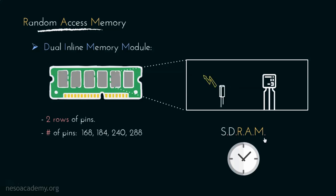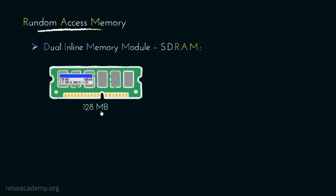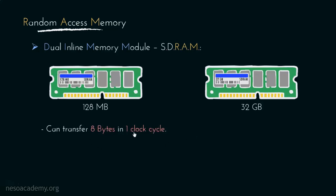In the case of SDRAMs, due to synchronization with the system clock, we can achieve efficiently controlled timing. The storage capacity of DIMM-SDRAMs ranges from 128 MB to 32 GB, and they can transfer 64 bits in one clock cycle. Since 1 byte is 8 bits, DIMM-SDRAMs can transfer 64 divided by 8, that is 8 bytes per clock cycle. This is known as the data path, so we can state that DIMMs have 8-byte wide data paths.